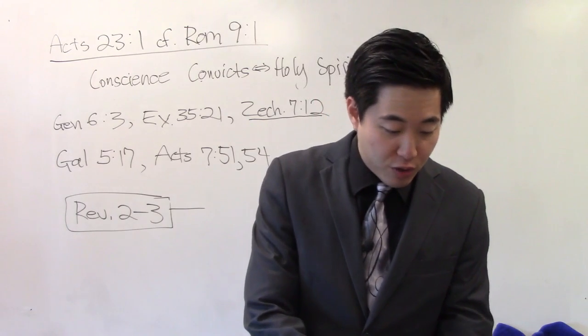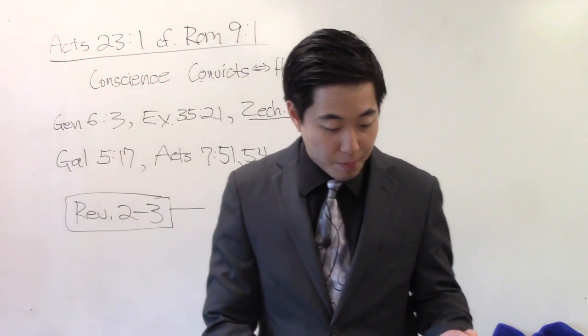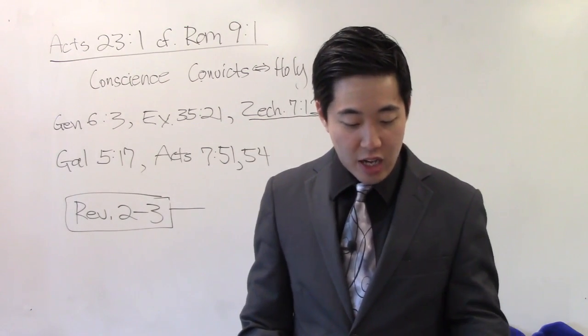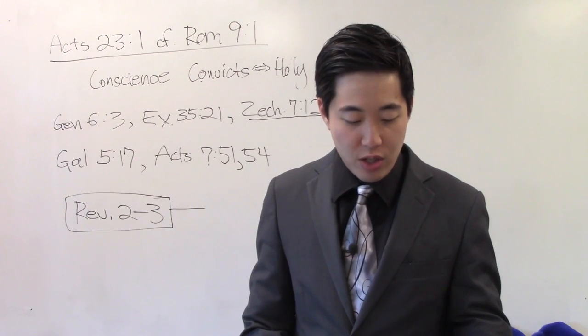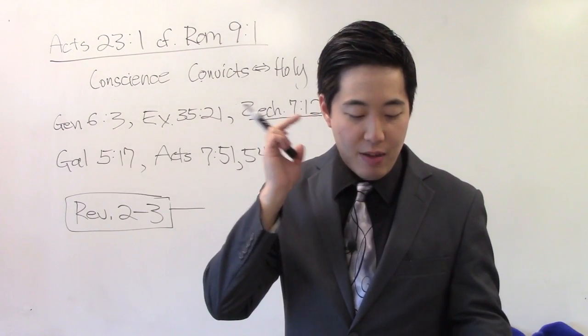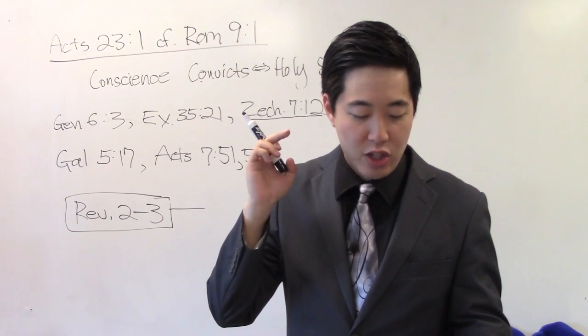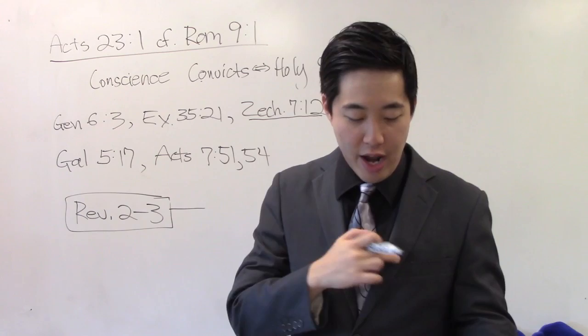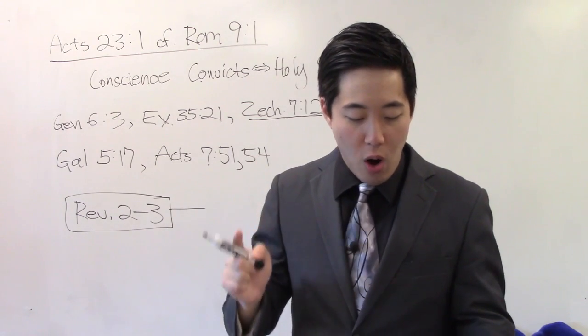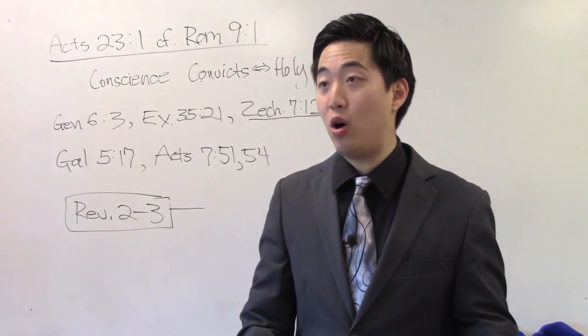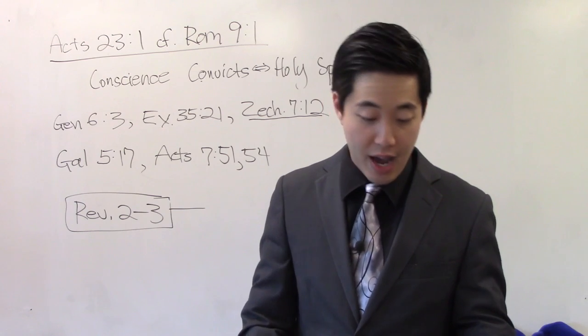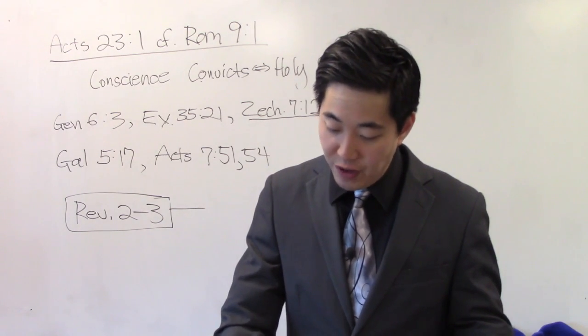Acts chapter 7 verse 51. Look at this one. Ye stiff-necked and uncircumcised in heart and ears. See that? They resist. They reject God's word. They're stiff-necked, uncircumcised in heart. No conviction. Why? Ye do always resist the Holy Ghost. That's very plain. See that?